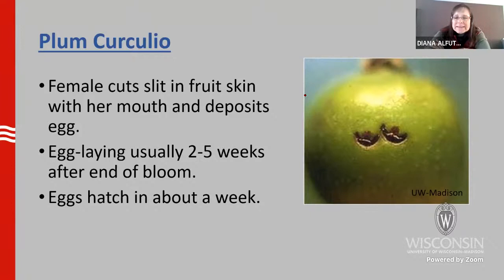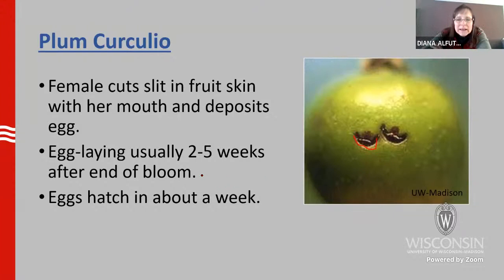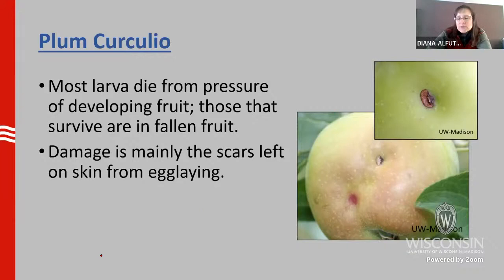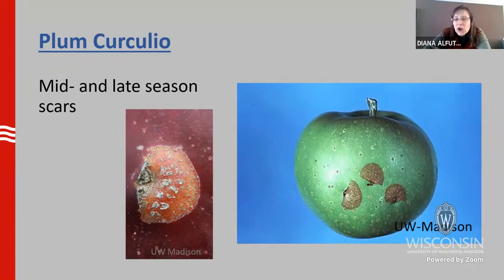The female will get on the tiny little fruits — when they're super small, smaller than the size of a dime — and she will make a little moon-shaped slit in the fruit and lay the eggs underneath that flap. Egg laying usually takes place in the two to five week period after the end of bloom, and the eggs hatch in about a week. Most of the larvae are going to die if the fruit stays on the tree, because the pressure from the developing fruit will squish and kill them. The larvae only develop in fruits that fall to the ground, but what we're left with on fruits that stay on the tree are these scars. If you see fan-shaped or half-moon-shaped scars on the fruit surface, that's from plum curculio.